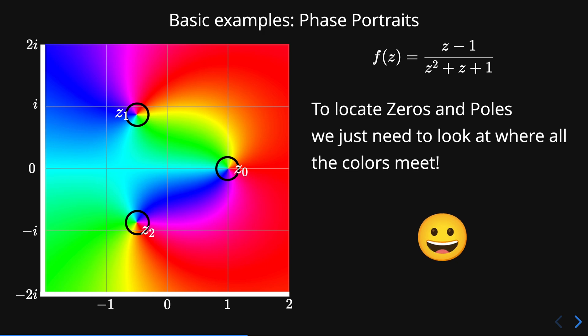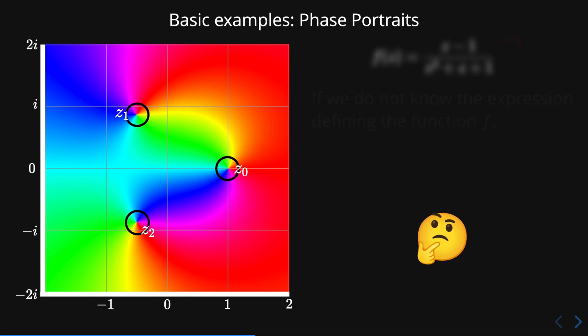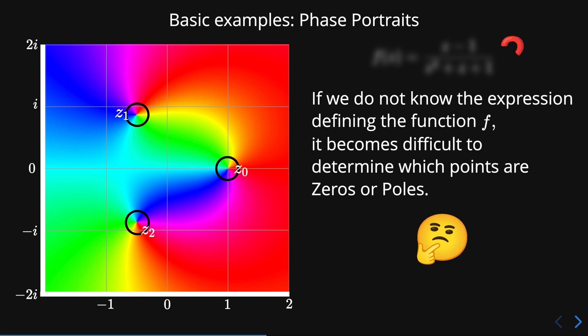You can use phase portraits to locate zeros and poles easily. We just need to look at where all the colors meet. The only issue is that if we do not know the expression that defines the function f, it is really hard to determine which points are zeros or poles.